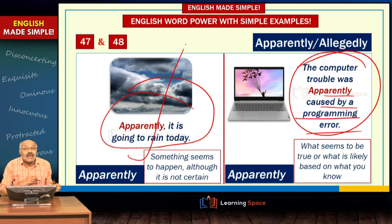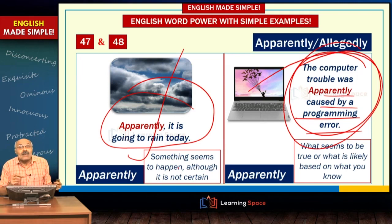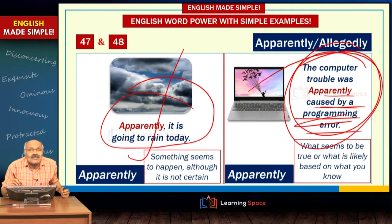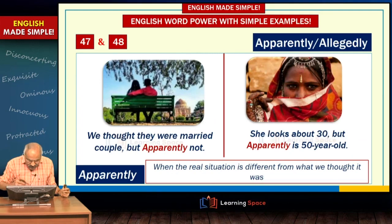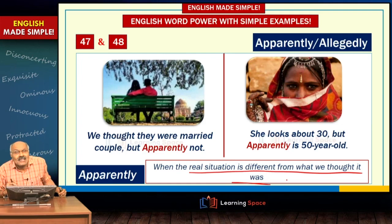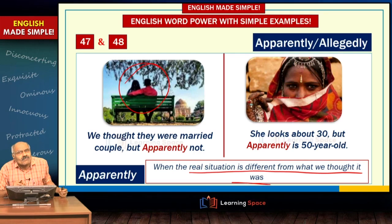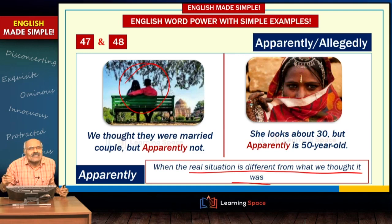So 'apparently' is used when something seems likely but is not certain, and also — most importantly — when the real situation is different from what we thought. For example: a boy and girl are sitting in a park; everyone thought they were a married couple, but apparently not. That means everyone thought they were married but in reality they are just friends. Similarly, she looks about 30 but apparently she is 50 years old — reality is something different.